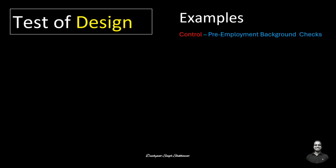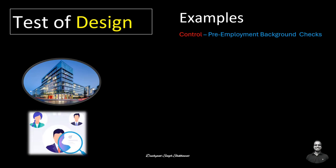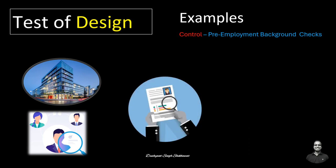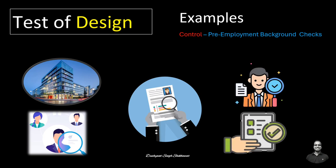Another example: if a company states that they conduct background checks on all new hires, an auditor would confirm this by checking if a background check was conducted on a recently hired employee. If confirmed, the auditor can validate that the control has been designed as stated.